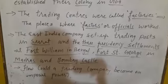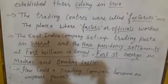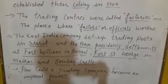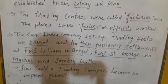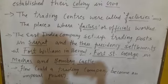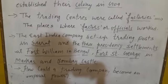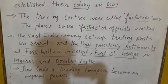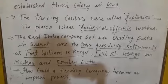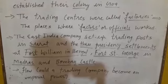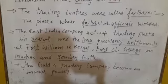These trading companies purchased so many things from India at a very cheap rate, like spices, cotton, textile, indigo, and saltpeter. Saltpeter means raw material for making gunpowder. These trading companies purchased these items at very cheap rates and sold them in Europe and America at very high prices, and got huge profits.